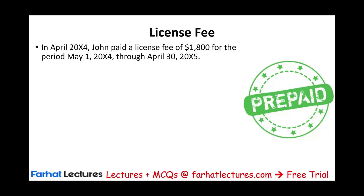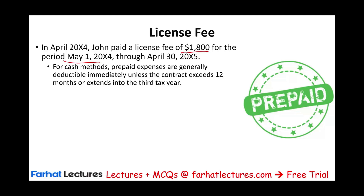In April 20x4, John paid a license fee of $1,800 for the period May 1st through April 30th of the following year, x5. What can we do with this $1,800 in the form of a prepaid? This is a prepaid expense — not interest, because remember, interest has a special prepaid rule. For the cash method, generally we can deduct anything that doesn't exceed 12 months or extend into the third period. So we can expense it. The 12-month rule: does not go into year x6, which is the third year, so we're fine.